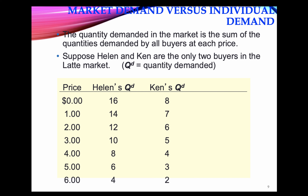Suppose there are only two individuals in the market. When we look at market demand, we aggregate over all individuals. At price P equals one, the market demand is Helen's demand of 14 plus Ken's demand of seven, giving us the market demand.